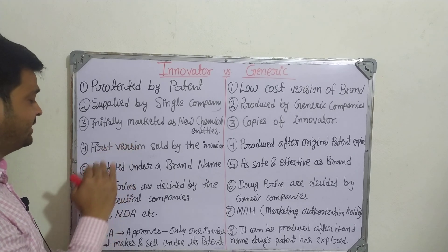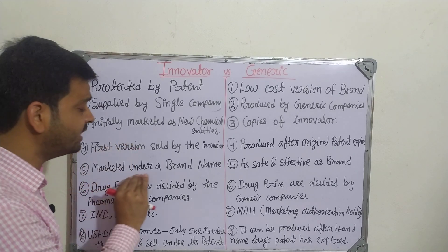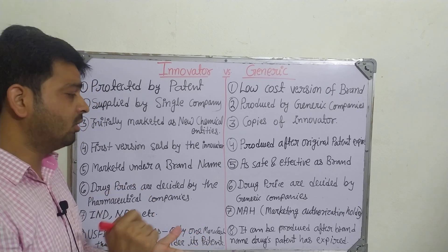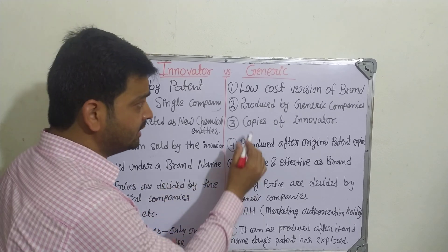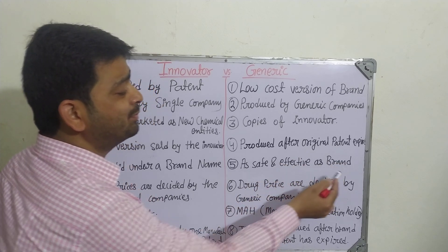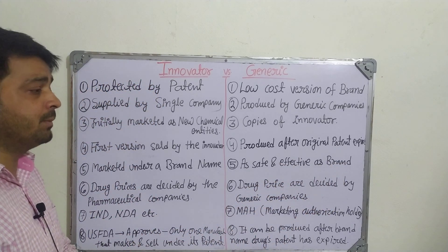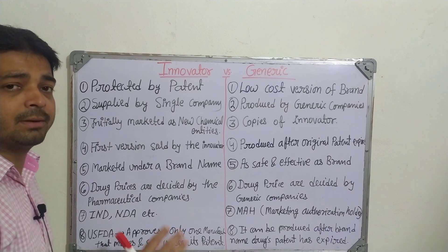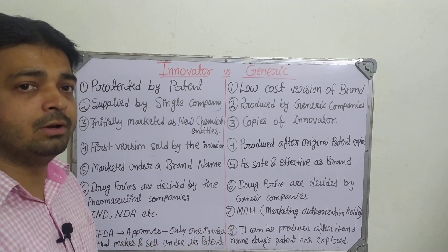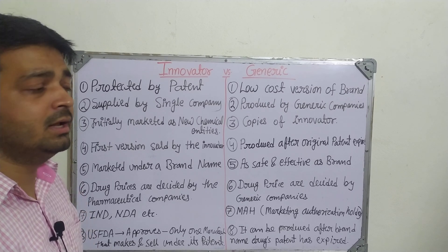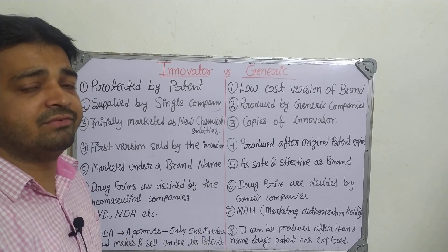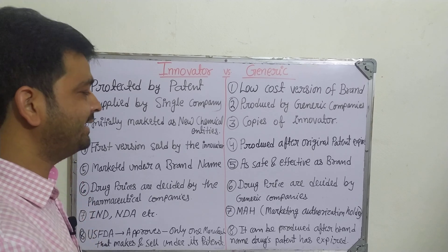The fifth point: under the innovator or branded drug, it is marketed under a brand name — for example, metformin or something like that. In the generic case, the drug is as safe and effective as the brand, but there will not be that particular brand name. It will have some other type of name which will look similar to a brand name, but it will not be the branded drug. Safety and efficacy-wise, however, it will definitely fulfill the branded drug standard.